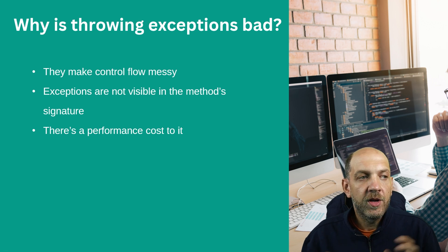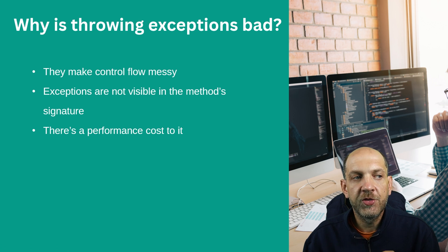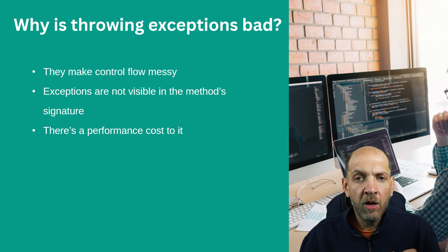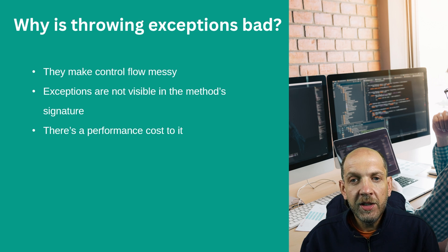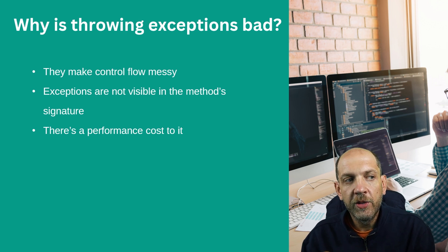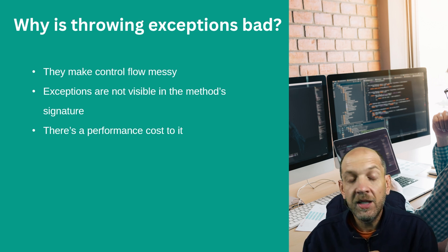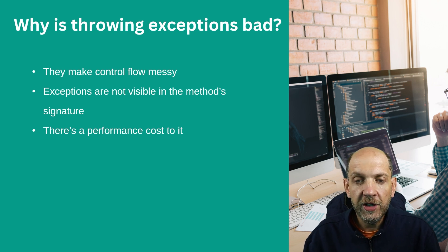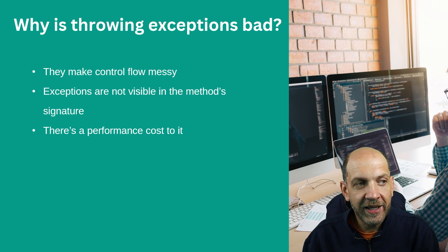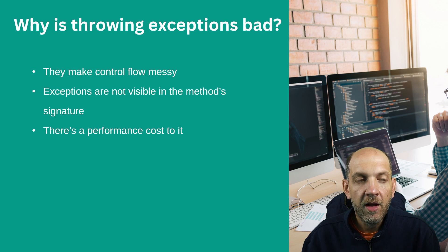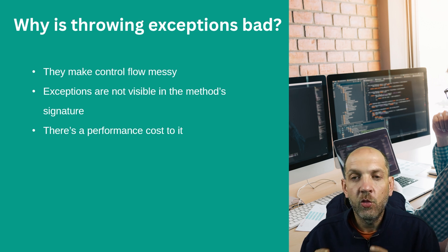Now we've covered some basic theory about what exceptions should be and when they should be thrown. But I know there is a huge gap from theory to practice — understanding in an exact scenario, for instance in an API, where should or shouldn't we throw. So let's go over to Visual Studio and I want to show you three different scenarios and talk about where we should throw an exception and where not.